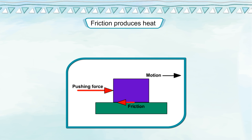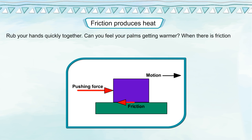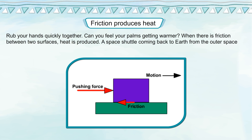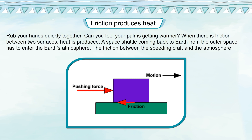Friction produces heat. Rub your hands quickly together. Can you feel your palms getting warmer? When there is friction between two surfaces, heat is produced. A space shuttle coming back to Earth from outer space has to enter the Earth's atmosphere. The friction between the speeding craft and the atmosphere creates so much heat that the space shuttle glows red hot.